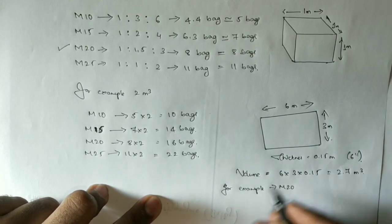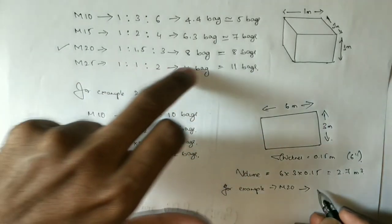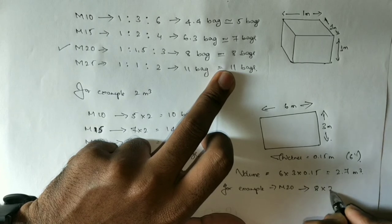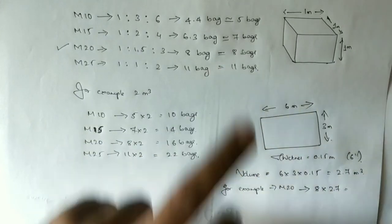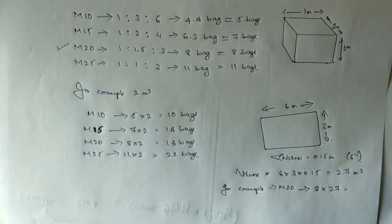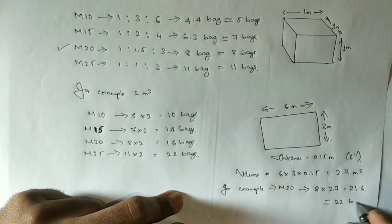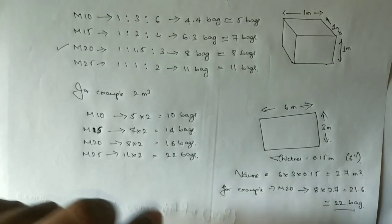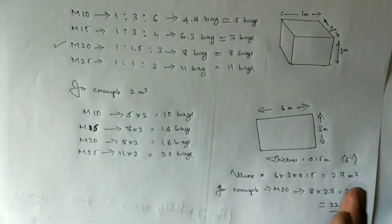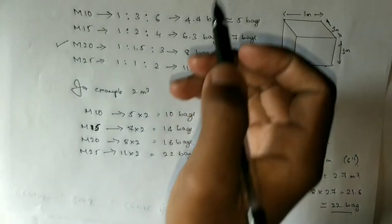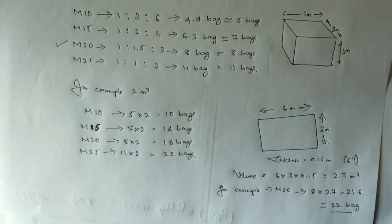For M20 grade cement, 1 cubic meter of concrete requires 8 bags of cement. So 8 times 2.7, which will be equal to 21.6, or around 22 bags of cement. So the calculation is straightforward: get the dimensions, calculate the volume in cubic meters, and multiply by the cement requirement per cubic meter.